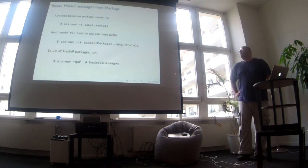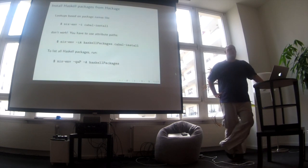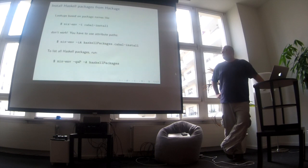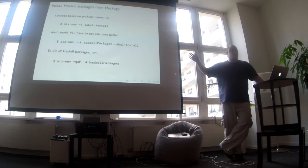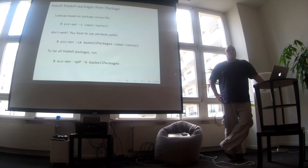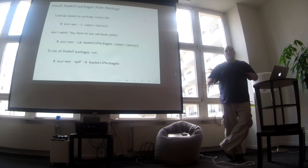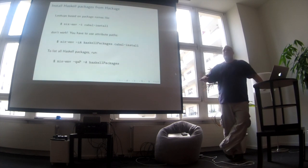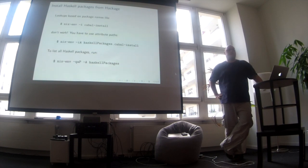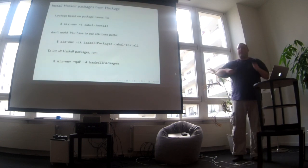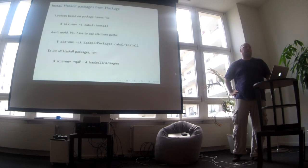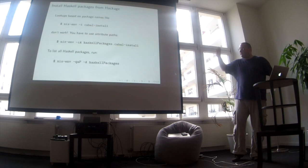The most baffling thing about Haskell packages is that none of them show up in the package list. When you run nix-env with the -q -a parameter and it shows you all packages, there is not a single Haskell package in there. The reason is that nixpkgs has about 11,000 packages, and Haskell packages are 9,000-something — so adding those to the index would immediately double the amount of packages, making querying and installing operations significantly slower for everybody.